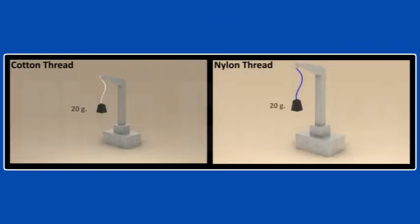We see that cotton thread breaks more easily as compared to nylon thread. Nylon thread goes on stretching when weights are placed in the pan. It requires a lot of weight to break the nylon thread.